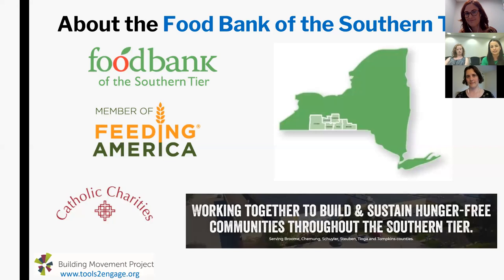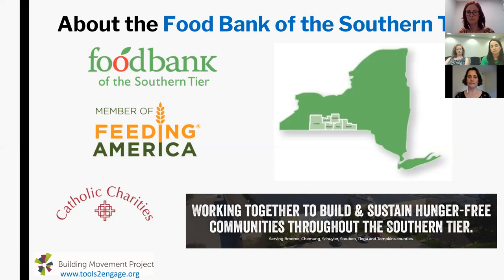Our mission statement is working together to build and sustain hunger-free communities throughout the Southern Tier. I always like to point out the word 'sustain.' The food banking model sources donations and purchases food that we centralize and distribute through partner agencies to meet immediate needs — people get about a three-day supply when they visit one of our programs. Even if we had endless resources, that's not a sustainable model. Our mission statement challenges us: what does it actually mean to build and sustain a hunger-free community? That means we've ended hunger and we don't need to exist anymore.